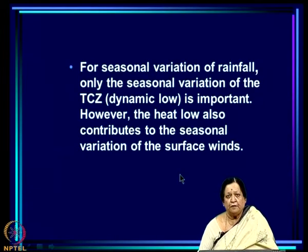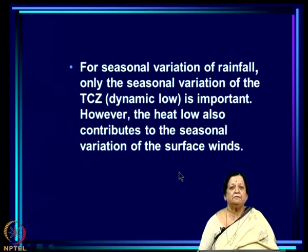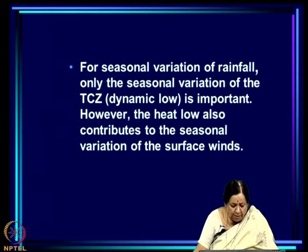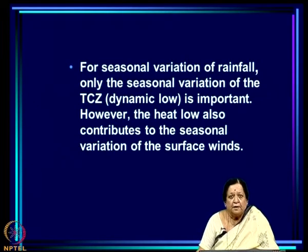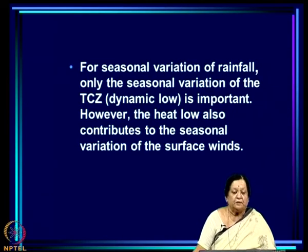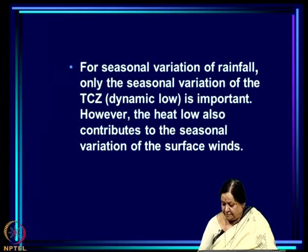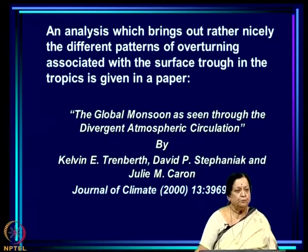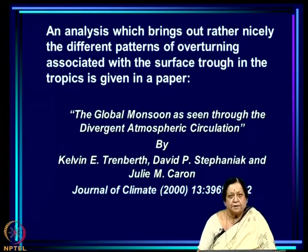For seasonal variation of rainfall, only the seasonal variation of the TCG is important. If you are interested in seasonal variation of rainfall, only the seasonal variation of the dynamic low matters. But the heat low also contributes to the seasonal variation of surface winds, because surface winds depend on pressure gradients and therefore on the heat low as well.